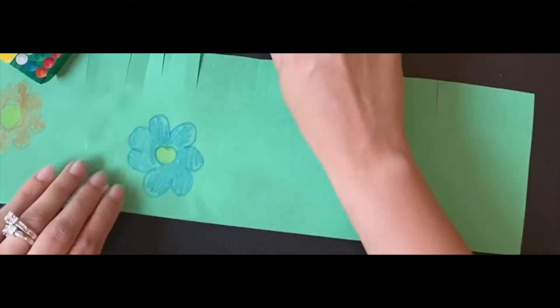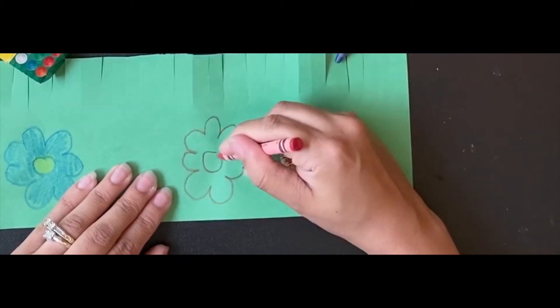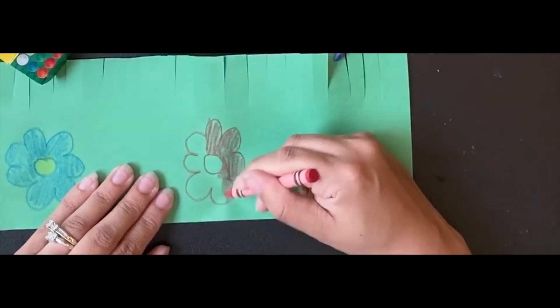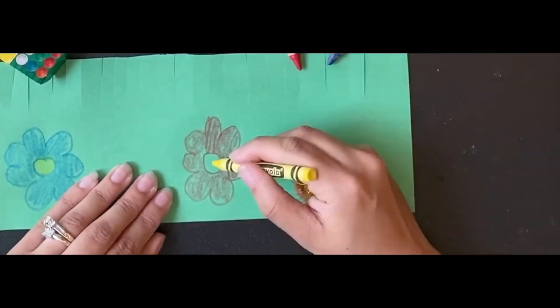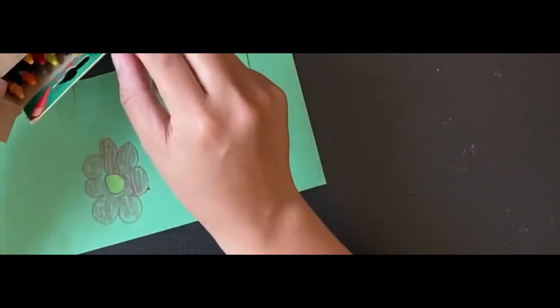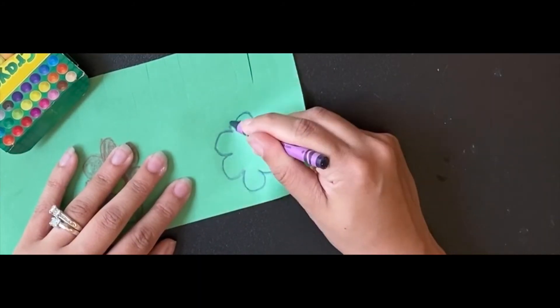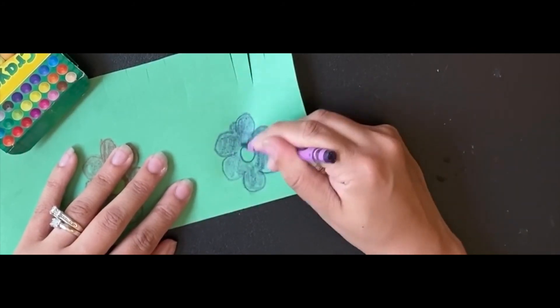So you want to keep on going until you finish your whole garden of colors and make sure that you're using your thumb index and middle finger while you're coloring. And make sure your other hand's holding the paper while you color.